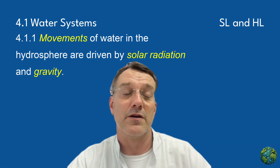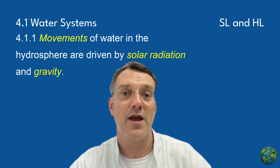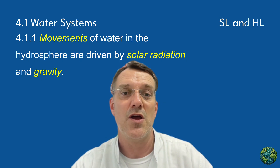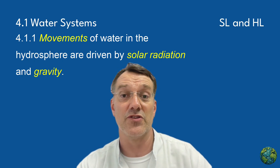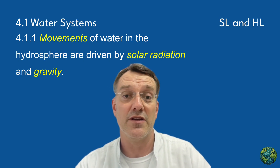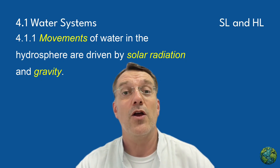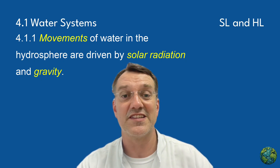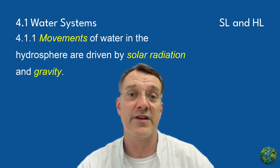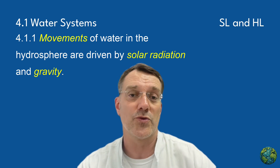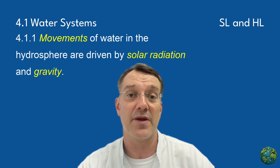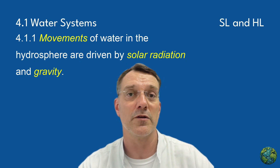The movements of water in the hydrosphere are driven by two main forces: solar radiation and gravity. Solar radiation provides the energy that powers evaporation and transpiration. When the sun heats water in oceans, lakes, rivers, and soil, it transforms liquid water into water vapor. Gravity, on the other hand, pulls water downwards. It causes precipitation to fall from clouds to the Earth's surface, drives water downhill in rivers and streams, and pulls water through soil in the processes of infiltration and percolation. Without gravity, the water cycle would stop as water wouldn't flow downhill or move through underground aquifers.